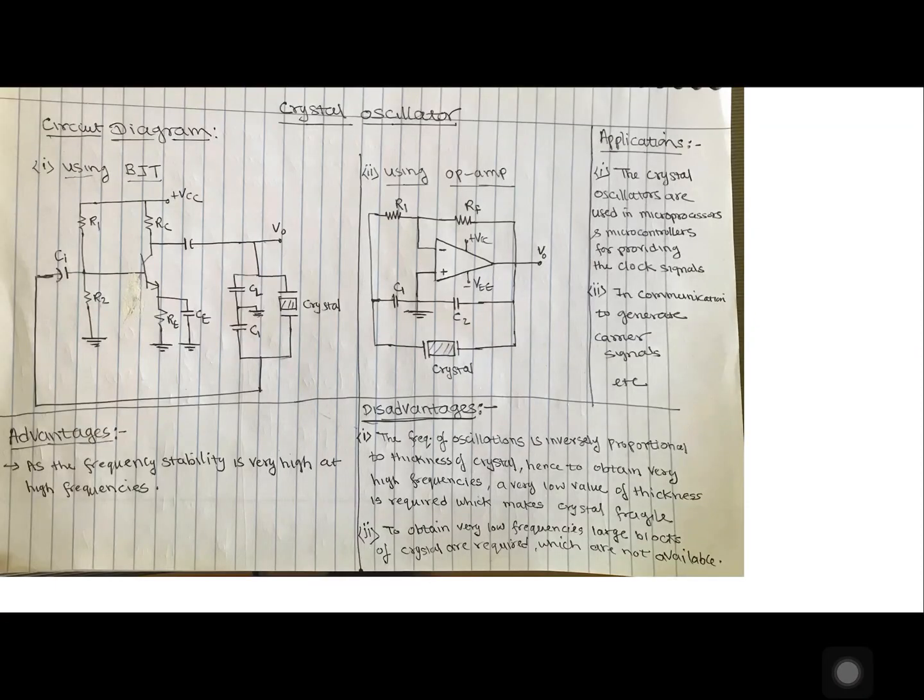Let's see the circuit. This is first circuit using BJT. See the feedback network here and crystal. Instead of inductor, you have a crystal. Same is the case with this op-amp based circuit. Now this forms your feedback network.